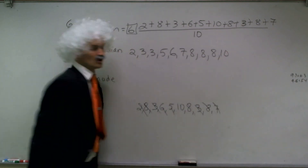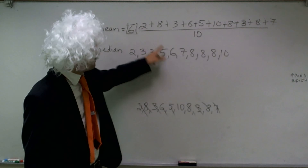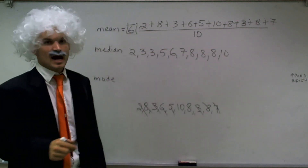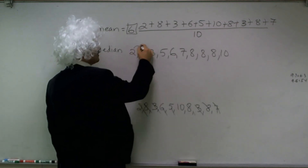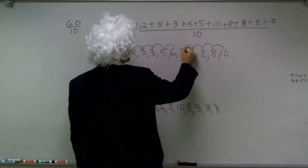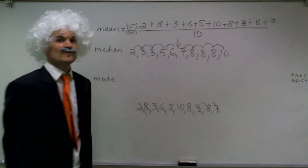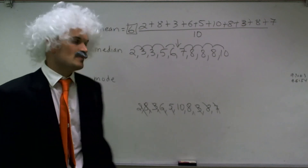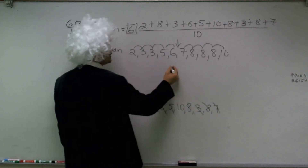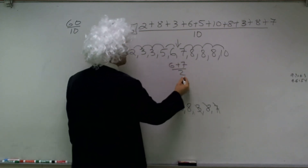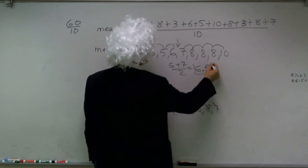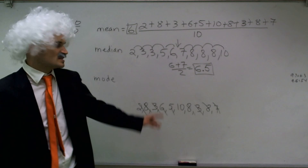Just to double-check my work, I'm going to count and make sure I have all 10. 1, 2, 3, 4, 5, 6, 7, 8, 9, 10. Okay, very good. Now what I need to do is count into the middle and find my middle value. 1, 2, 3, 4 — uh-oh. I don't have a middle value. So when I don't have a middle value, I need to find the mean of those two middle numbers: 6 plus 7 divided by 2 equals 6.5.